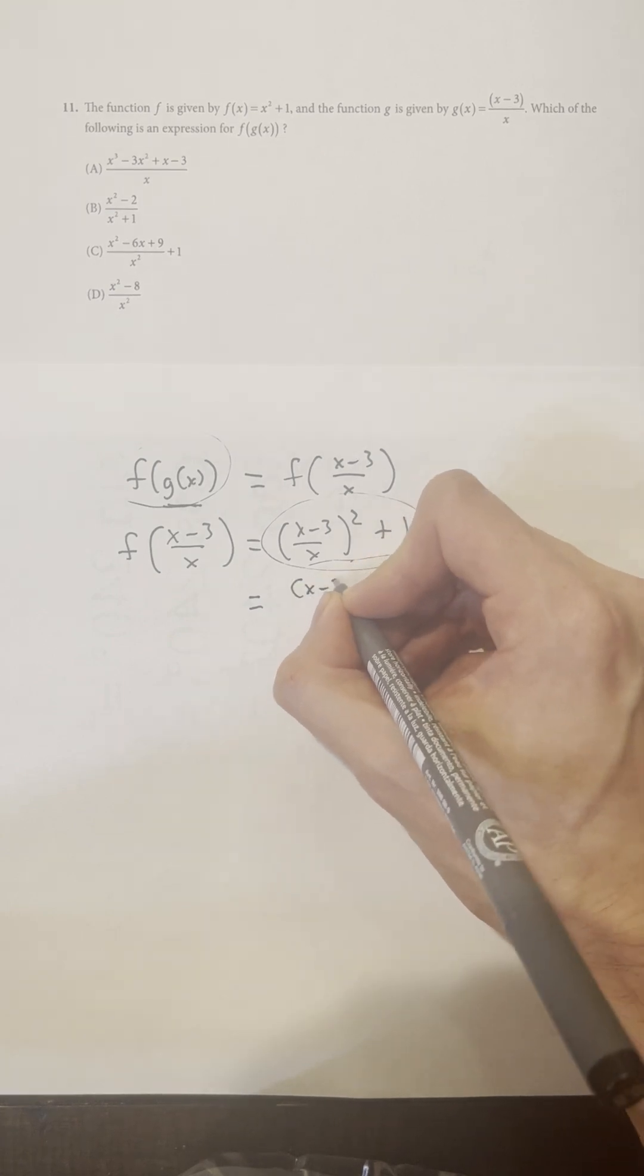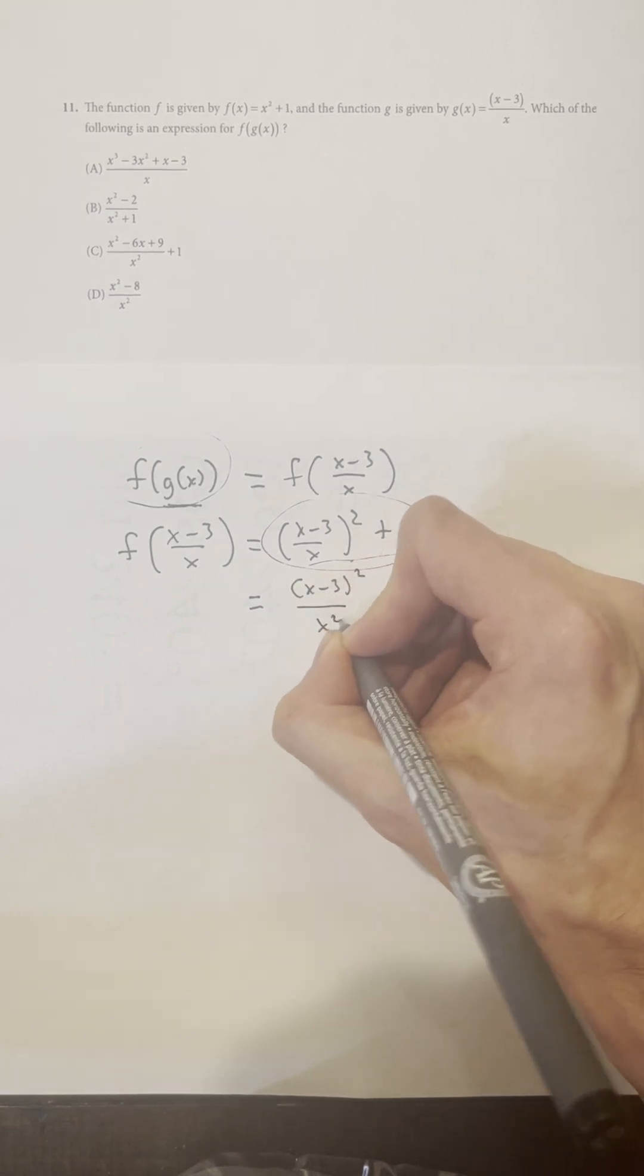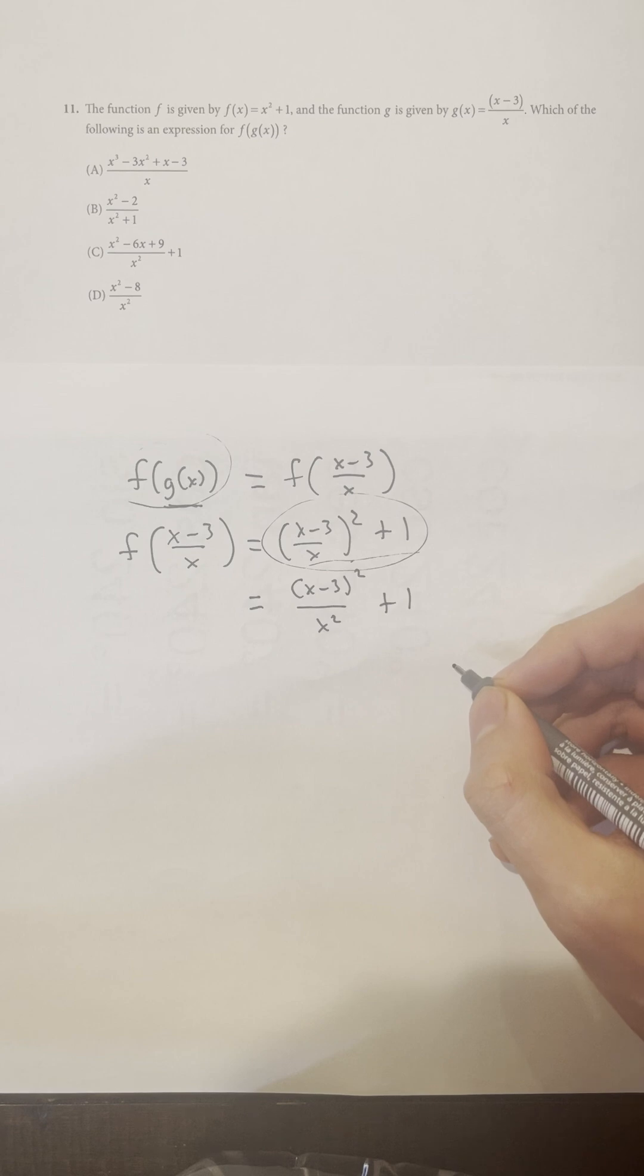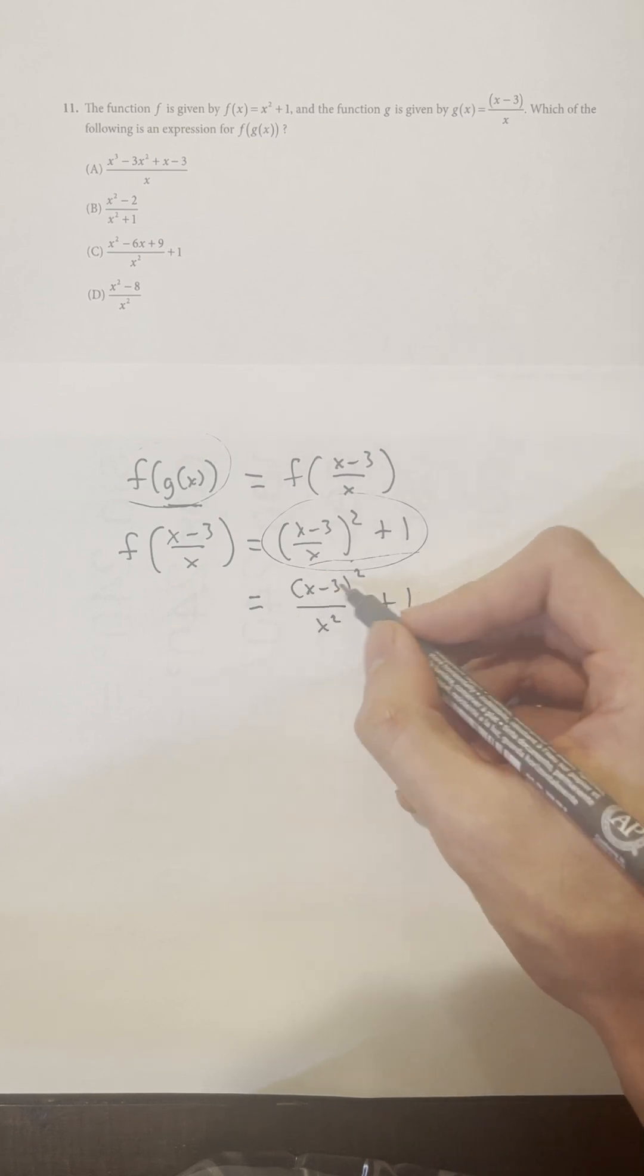So it's the same thing as (x-3)² over x². And how do we get rid of the parentheses here?